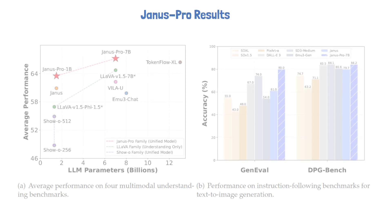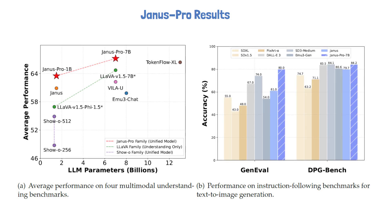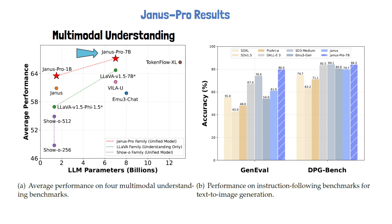Let's now explore some of the results presented in the Janus Pro paper. In the following figure, we can see a performance comparison of Janus Pro with other strong models. The left chart shows multimodal understanding results where the x-axis represents model size and the y-axis represents average accuracy across multiple benchmarks. Impressively, the 7 billion parameter Janus Pro outperforms other top models such as LLaVA. What makes it more impressive is that this is achieved using a unified model, while the LLaVA models are not unified. Janus Pro also significantly outperforms previous unified models such as Show, and slightly outperforms the unified model TokenFlow XL while being almost half its size.